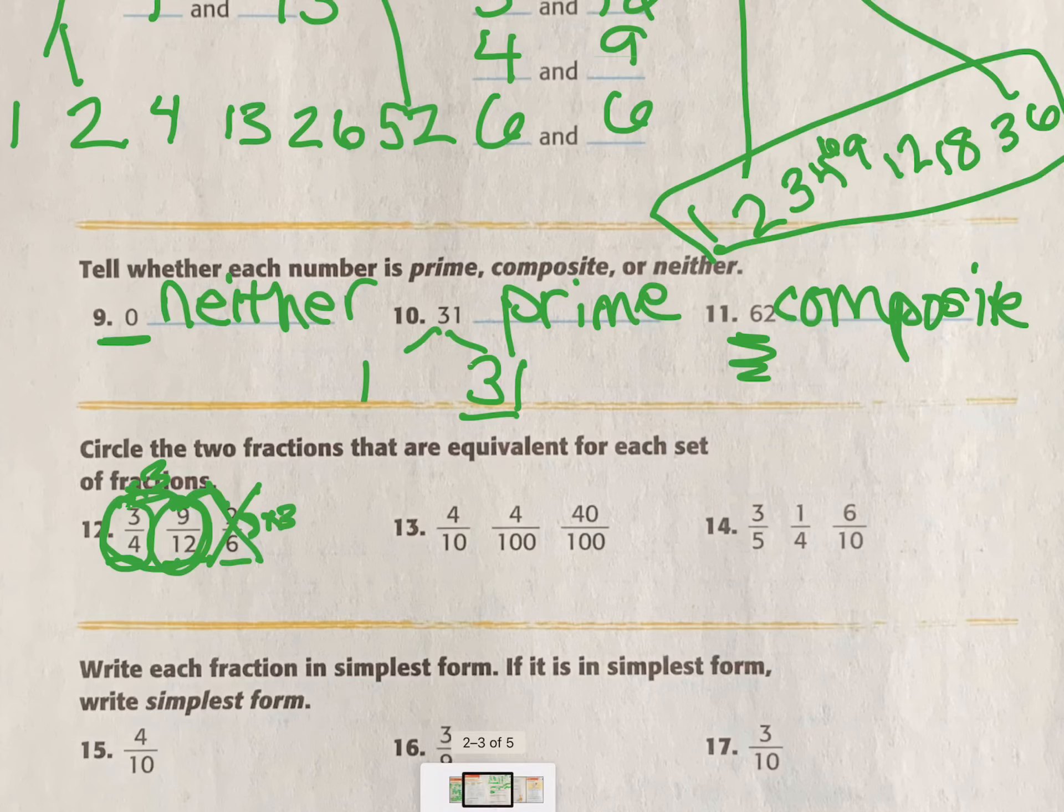Number 13. This one we can kind of look at a couple things. So we have 4 and 4 here. If I have the same number on the top but different denominators, can they be equivalent? No. So they can't be equivalent. What about if I have the same denominator but different tops? Can they be equivalent? No. So that leaves me to look at these two. 4 times 10 is 40. 10 times 10 is 100. So 40 hundredths and 4 tenths are equivalent.